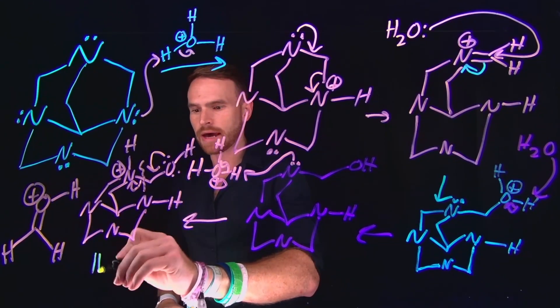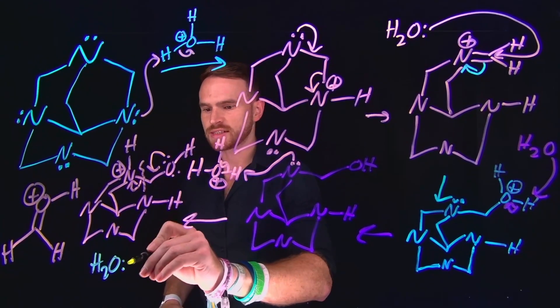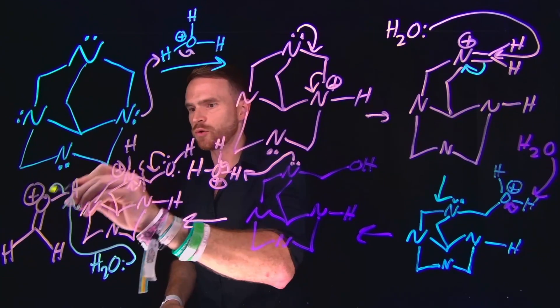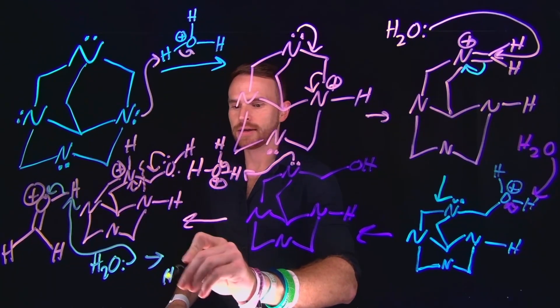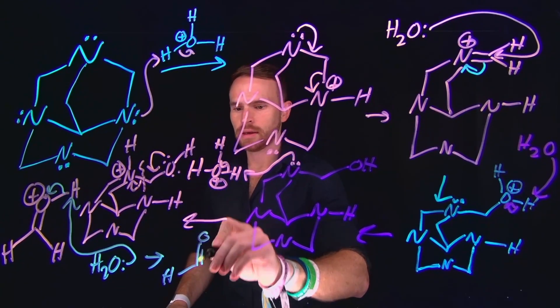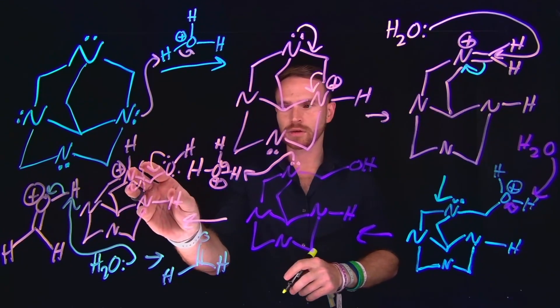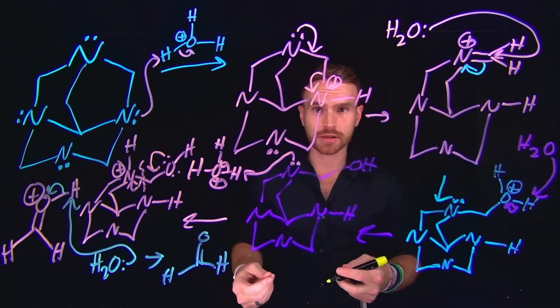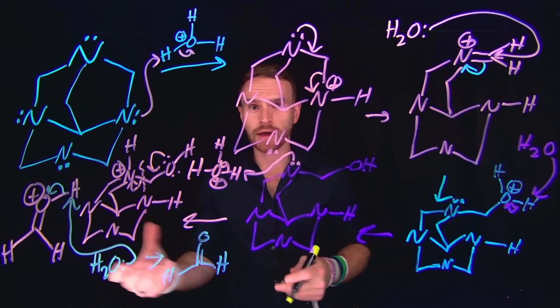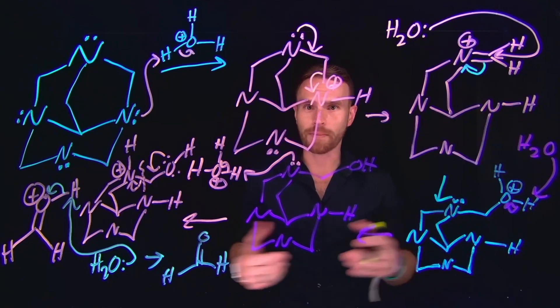So all that needs to happen now is another water molecule just needs to come in and deprotonate this group to make our formaldehyde. And importantly, this leaves behind the rest of this species, which can undergo subsequent transformations to go all the way to ammonia and multiple molecules of formaldehyde.